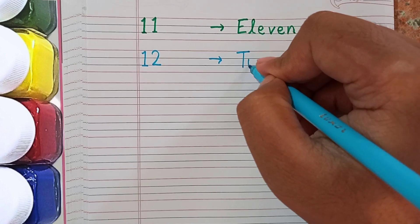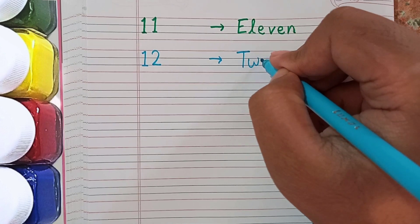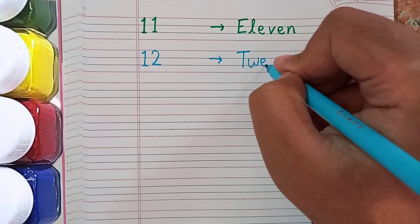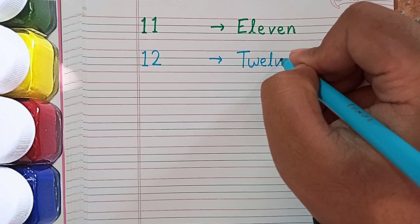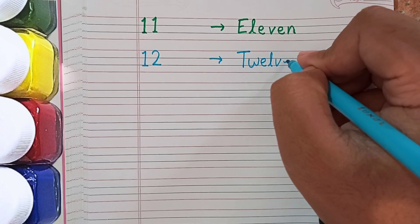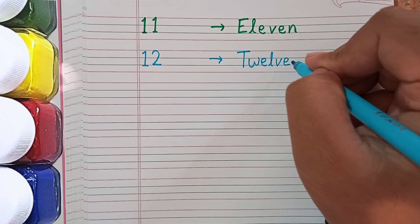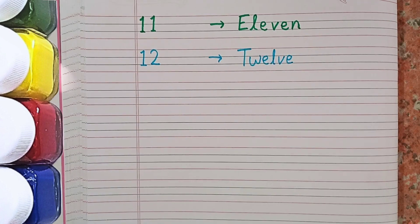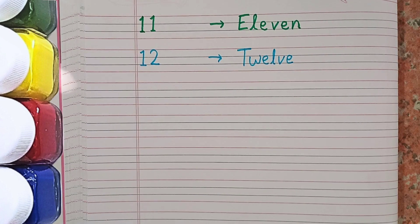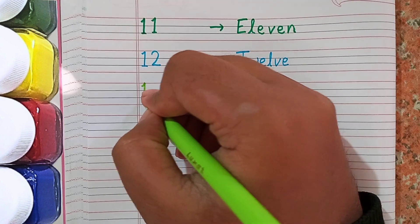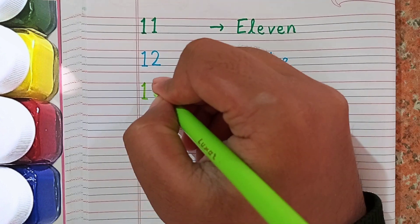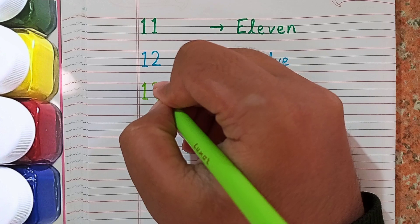12 and the spelling of 12 is T-W-E-L-V-E. Remember the spelling kids: T-W-E-L-V-E.